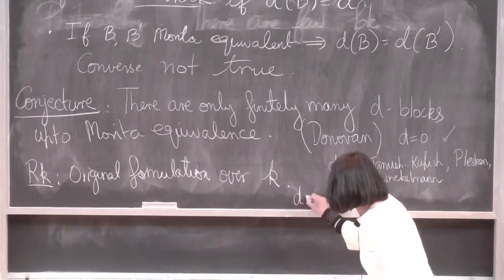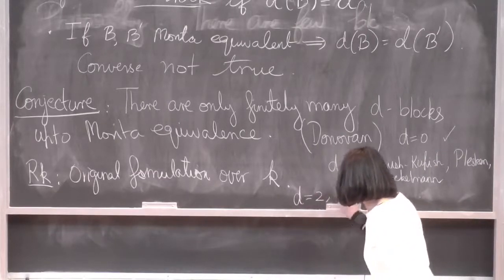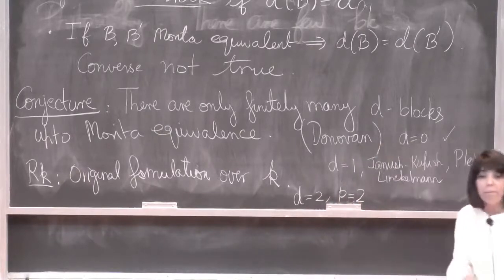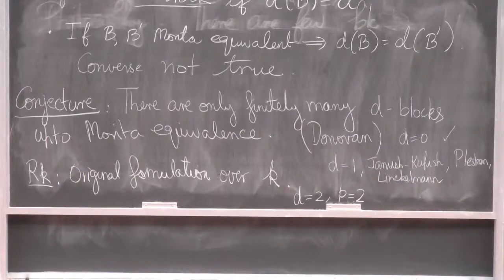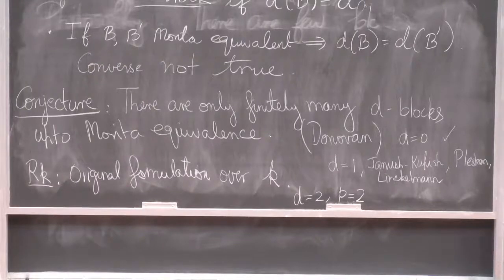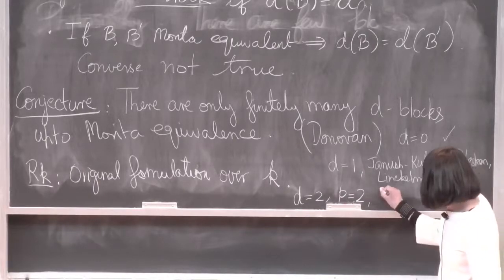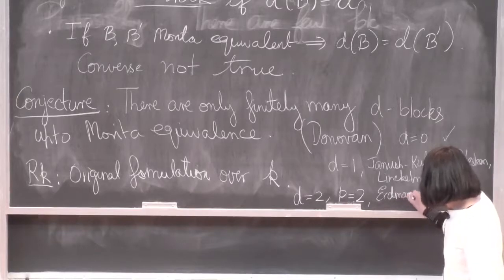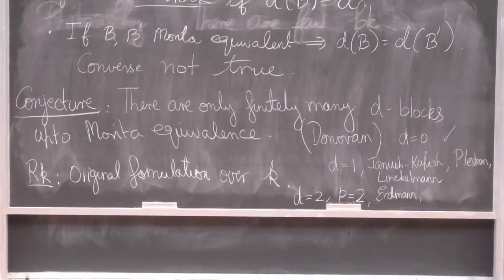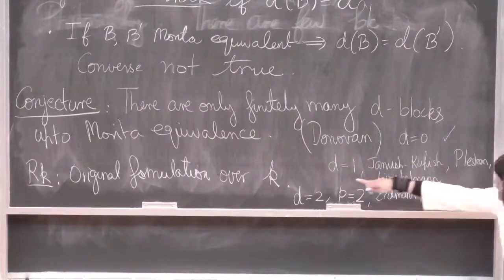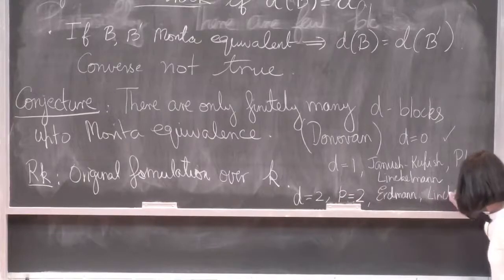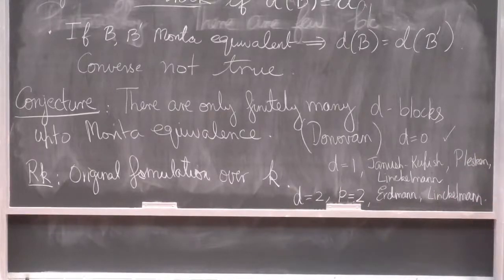For P equals 2, this falls out of work of Karin Erdmann in the 1980s, and that is over little k. The lift to O is also known, I believe. I want to stress that in both of these cases, the lifting to O is far from trivial, and there are many cases where we've been able to answer partial forms of Donovan's conjecture over little k but cannot do it over O.